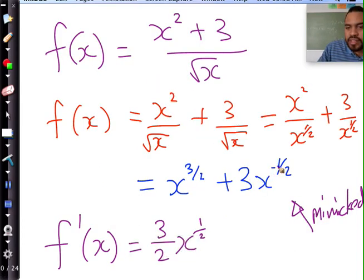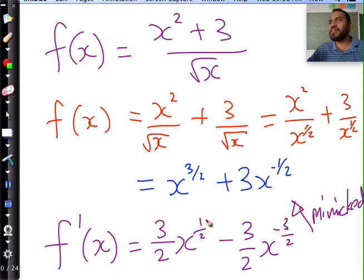Now you've got 3 times negative a half which is negative 3 over 2 x to the power of minus 3 over 2 because it's negative a half minus 1 which must give you minus 1 and a half.